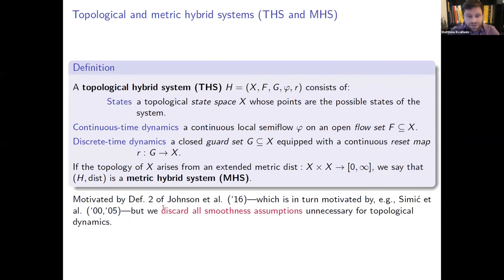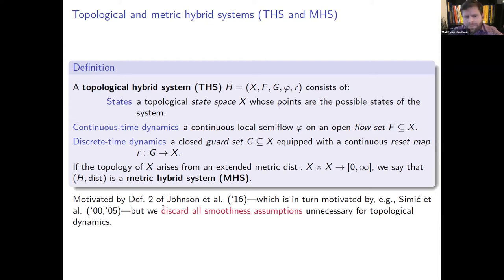A picture illustrates this: in a planar flow from an ODE, there is an unstable equilibrium at the origin, nearby trajectories spiral out to a stable limit cycle, and a sombrero-shaped graph of an example completely open Lyapunov function is shown. To generalize to hybrid systems: in the literature, state space is typically a disjoint union of smooth manifolds with boundary, with continuous dynamics from vector fields, closed guard sets, and smooth reset maps.